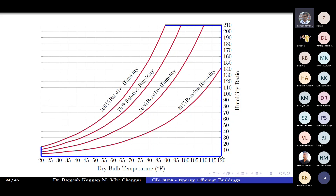Zero percent relative humidity is a flat line at the bottom, which you can ignore. If you want to plot 20% variation intervals for better understanding, you'd have curves at 80%, 60%, 40%, and 20%. This completes the first stage — plotting the boundary and all relative humidity curves using the given saturation points.